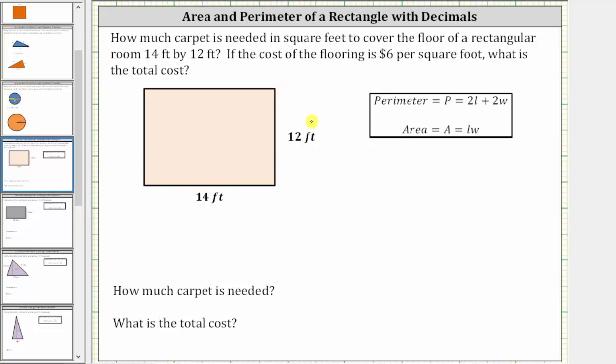Because we need to determine the number of square feet of carpeting that will fit in the room, we need to determine the area of the room. And since the room is a rectangle, we will use the area formula A equals length times width.